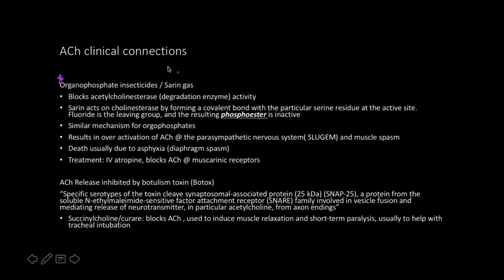What organophosphates and sarin gas do is block acetylcholinesterase, which is a degradation enzyme. At a synapse between a dendrite and a synaptic button, neurotransmitter is either diffusing away to be picked up by astrocytes, undergoing reuptake, or being broken down by enzymes on the surface of neurons. Acetylcholinesterase breaks the ester linkage and breaks down acetylcholine.